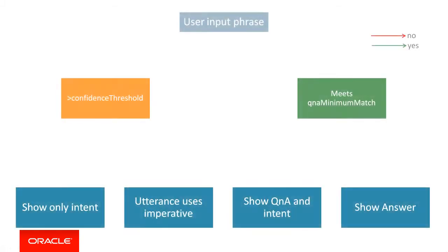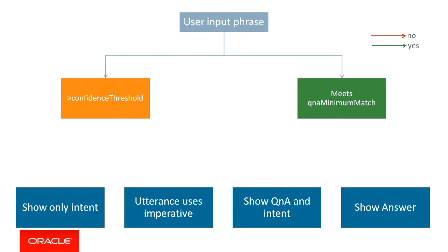An input phrase is sent to the two models in parallel. The models will digest that phrase and then spit out a result. For the intent model, the output will be a confidence probability between 0 and 1. If the probability is above the confidence threshold, which is a property in the dialogue flow, then the bot will assume an intent match.